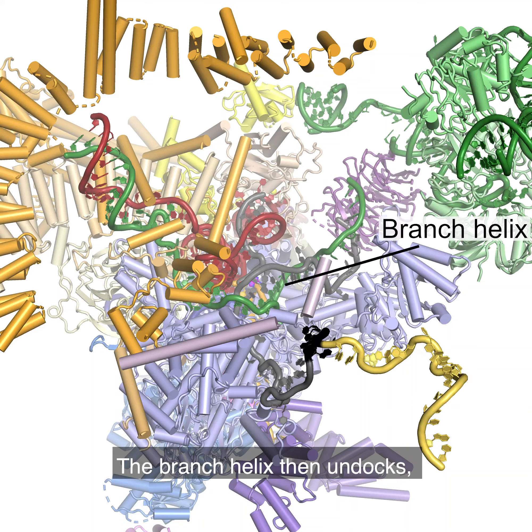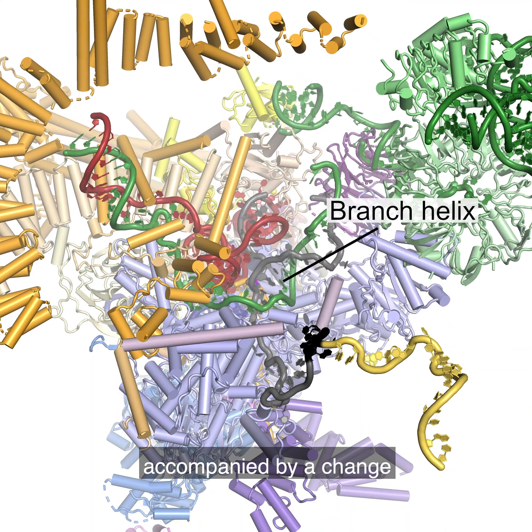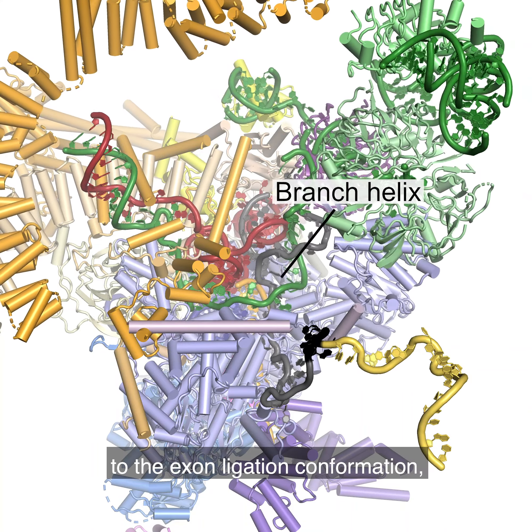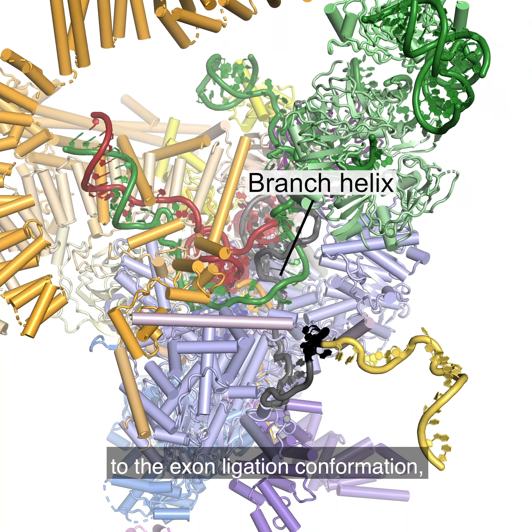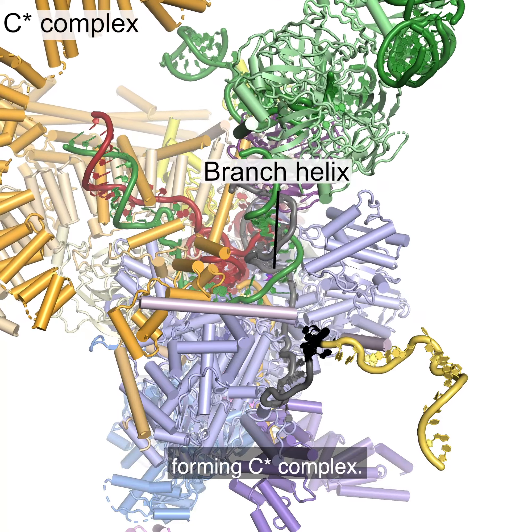The branch helix then undocks, accompanied by a change to the exon ligation conformation, forming C-star complex.